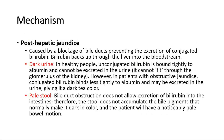For post-hepatic jaundice, it is caused by a blockage of bile ducts, preventing the excretion of conjugated bilirubin. Bilirubin backs up through the liver into the bloodstream. The two main signs in post-hepatic jaundice are dark urine and pale stool. In healthy people, unconjugated bilirubin is bound tightly to albumin and cannot be excreted in the urine because it cannot fit through the glomerulus of the kidney. However, in patients with obstructive jaundice, conjugated bilirubin binds less tightly to albumin and may be excreted in the urine, giving it a dark tea color.